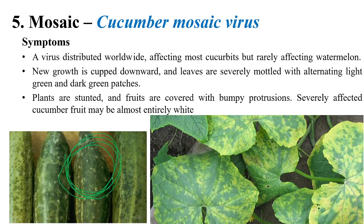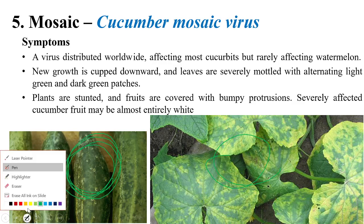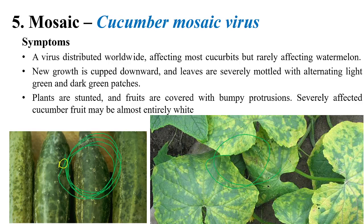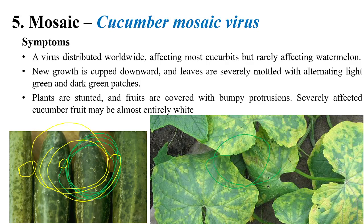The plants are stunted and yellowing of leaves can be observed. On the fruits, bumpy portions can be seen — it simply looks like psoriasis, making the fruit unappealing to eat and reducing market price. In later stages, the entire fruit slowly starts to turn white, completely removing it from the market and affecting its commercial value.